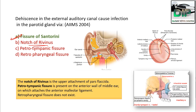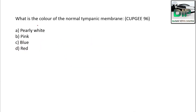The Notch of Rivinus is present in the upper attachment of the pars flaccida. The petrotympanic fissure is present in the anterior wall of the middle ear, on which the anterior malleolar ligament attaches. The retropharyngeal fissure doesn't exist.